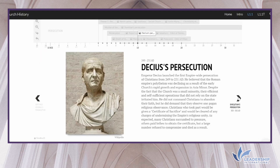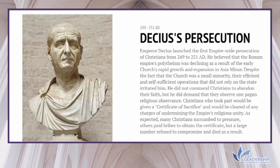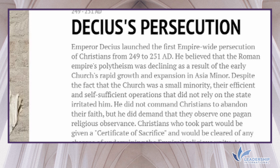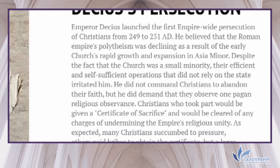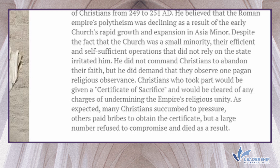Emperor Decius launched the first empire-wide persecutions of Christians from 249 to 251 AD. He believed that the Roman Empire's polytheism was declining as a result of the early church's rapid growth. Despite the church being a small minority, their efficient and self-sufficient operations irritated him. He did not command Christians to abandon their faith, but demanded that they observe one pagan religious observance. Those who complied received a certificate of sacrifice. As expected, many Christians succumbed to the pressure; others paid bribes to obtain the certificate, but a large number refused and died as a result.